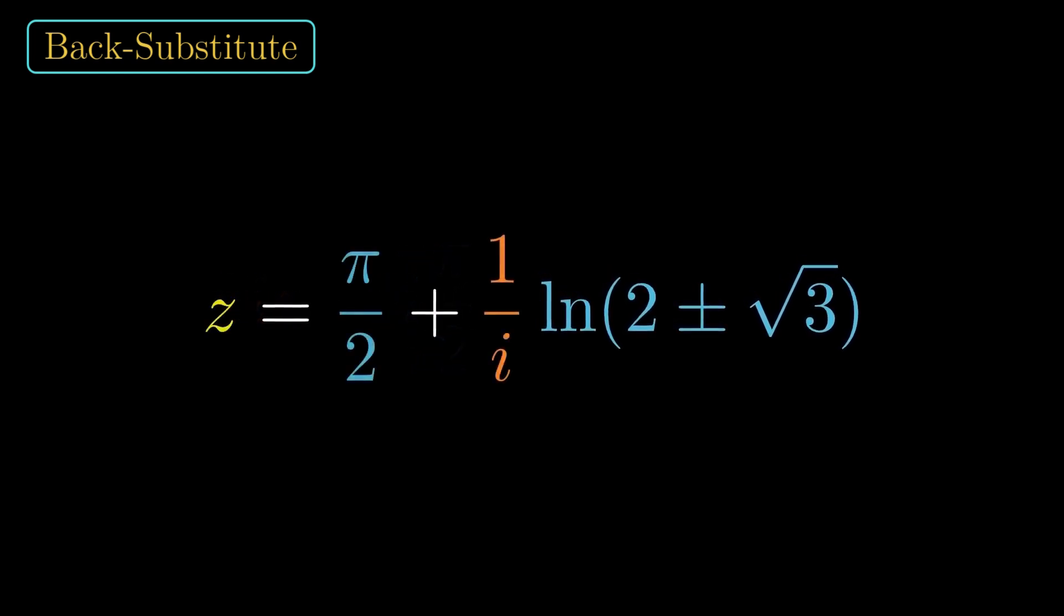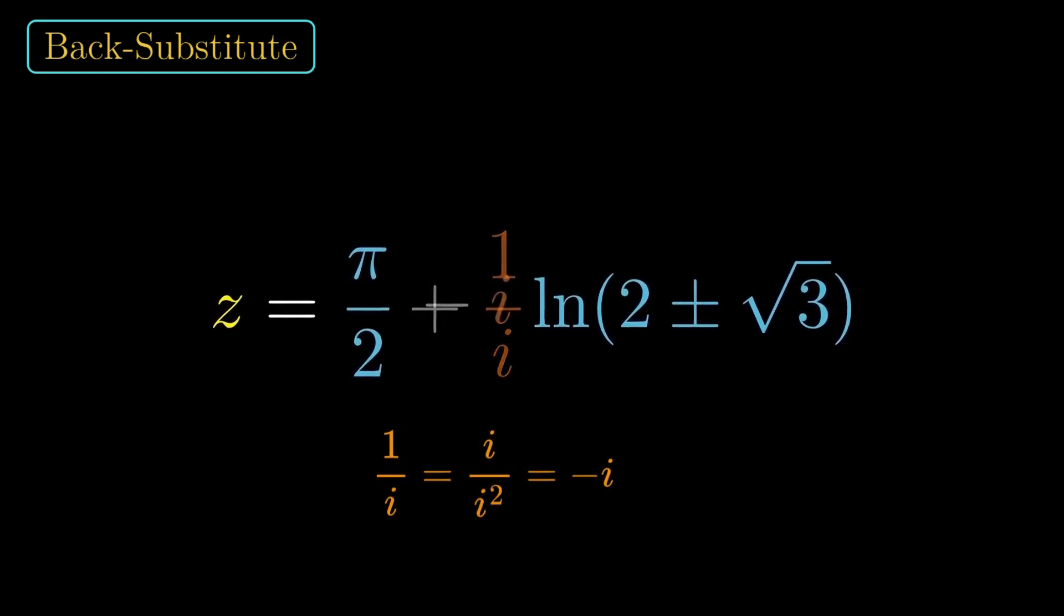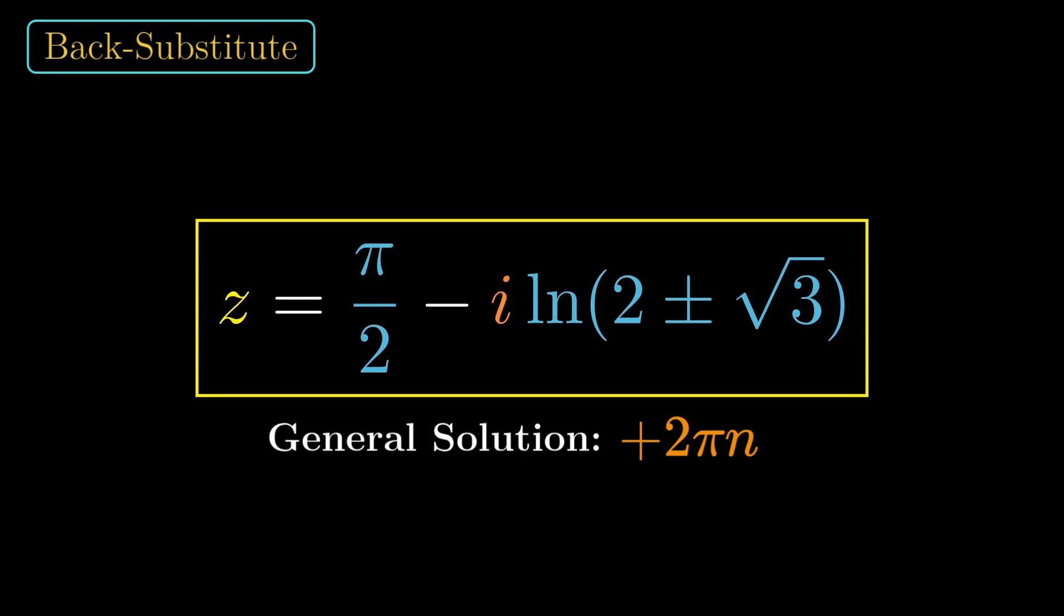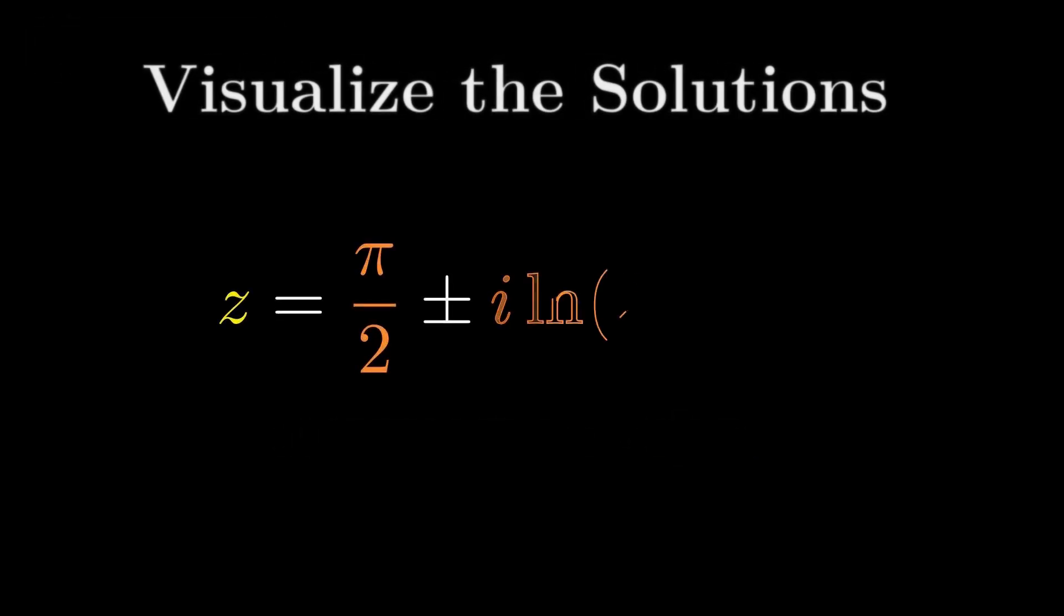Divide everything by i, z equals pi over 2 plus 1 over i times that log. And 1 over i is negative i. Final result, z equals pi over 2 minus i ln of 2 plus or minus root 3. And don't forget the full family repeats, plus 2 pi n. We found the exact solutions.